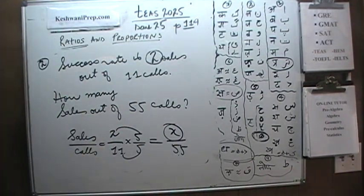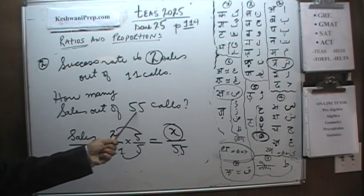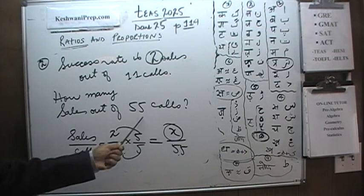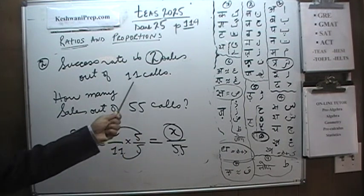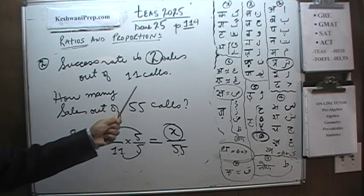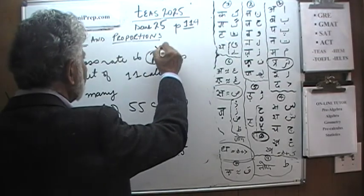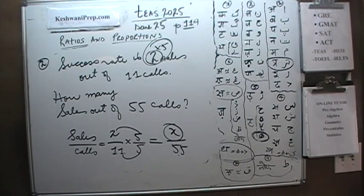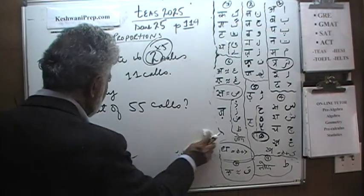The other way is just to look at it. This is 11, this is 55. So if she makes this many sales out of 11 calls and she's making 55 calls, that's 5 times as many. Since she's making 5 times as many calls, she's going to make 5 times as many sales, which is 10 sales. 2 times 5.